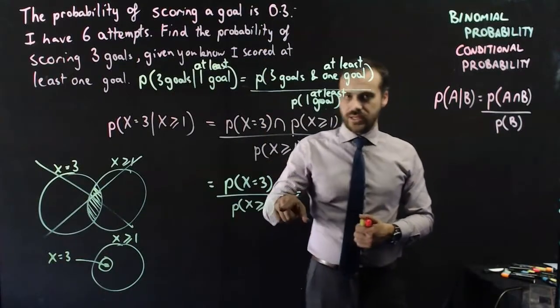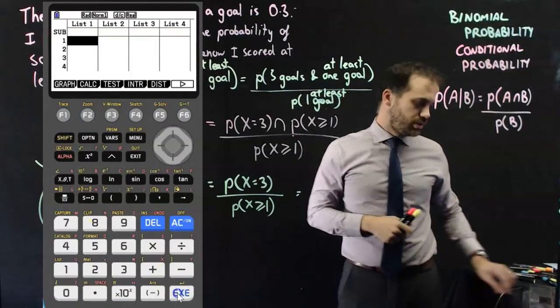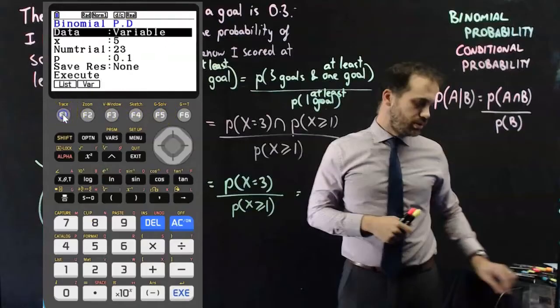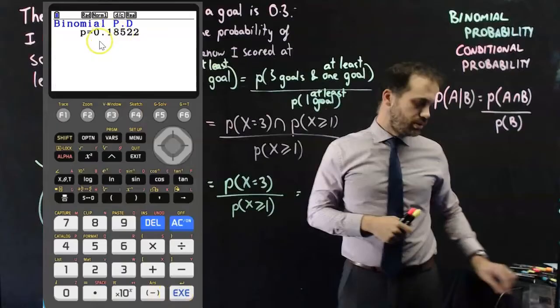And this is our binomial cumulative distribution. I'll just go into my stats mode there, and distribution, binomial. Now, the first one is a BPD. I want to know three from six trials and a probability of 0.3. And I've got my number there, 0.18522.